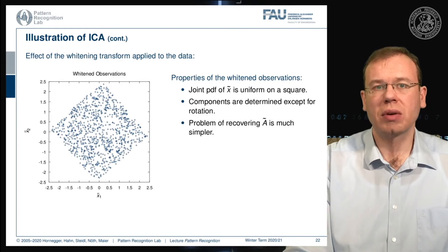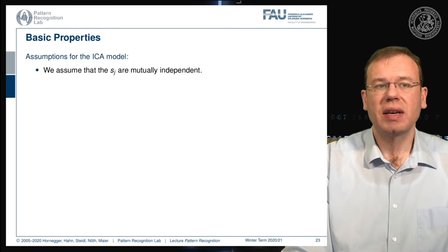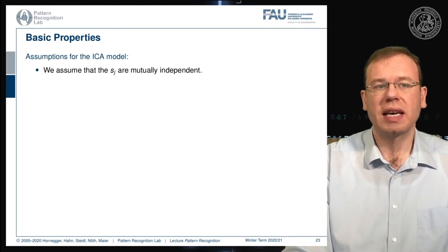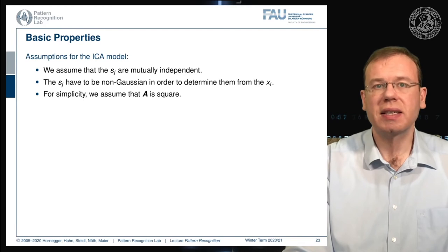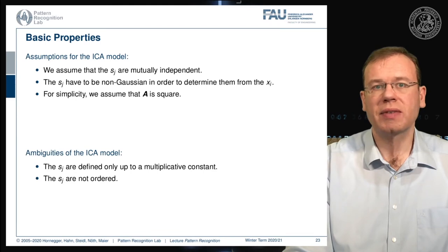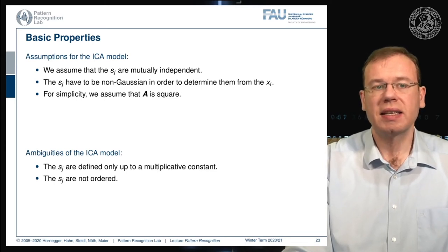Recovering A-tilde is much simpler than recovering the original mixing coefficients. In the ICA model we need to assume that the sj are mutually independent and non-Gaussian in order to determine them from the xi. For simplicity we assume A is square, but we still end up with some ambiguities.